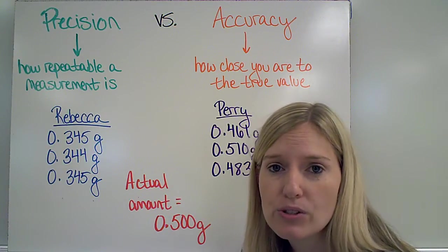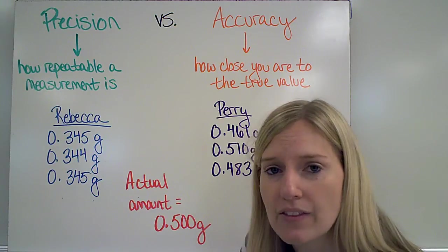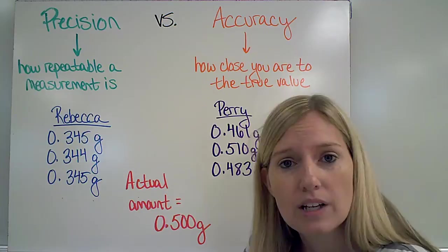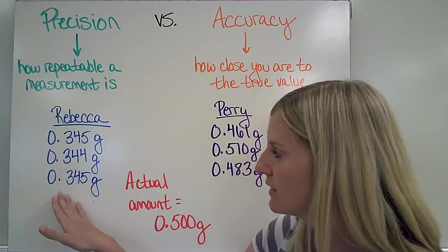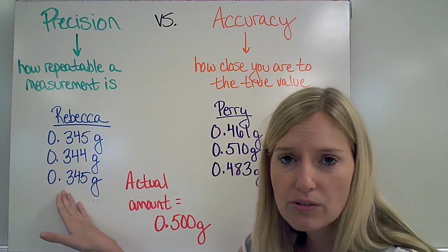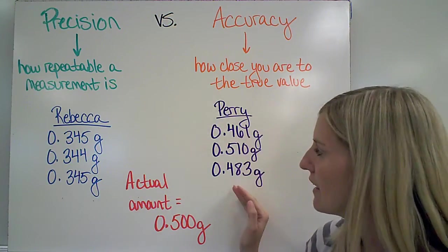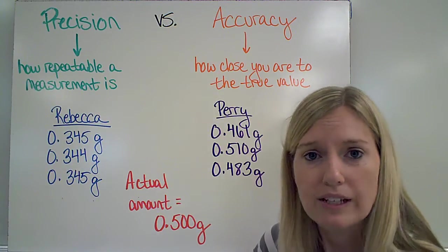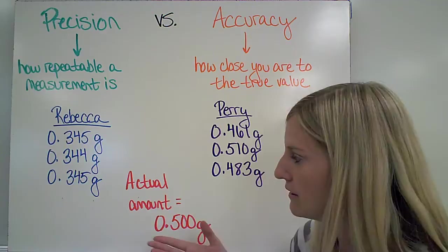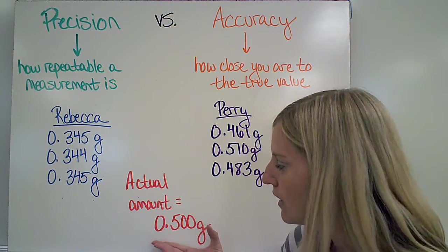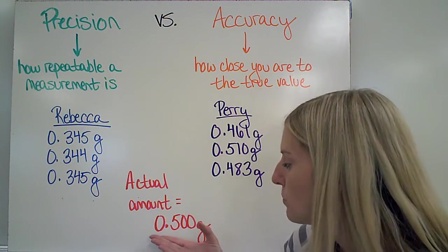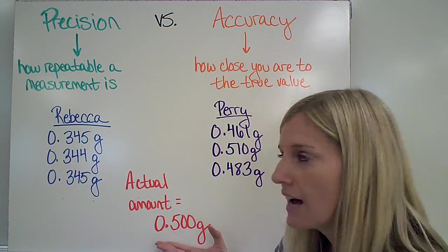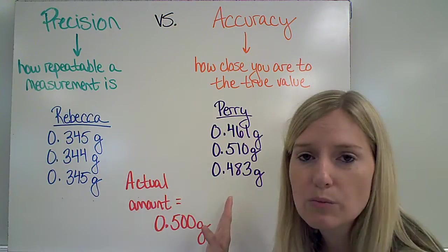There were awards given to students who were the most precise, and awards given to students who were the most accurate. If I look at these results, Rebecca got these three results for her three experiments. Perry got these three results for his three experiments. We did not know what the actual answer was, only our professor knew. Let's assume that the actual amount of that compound in the solution was 0.500 grams. If I know this, then I can decide which one is more precise and which one is more accurate.